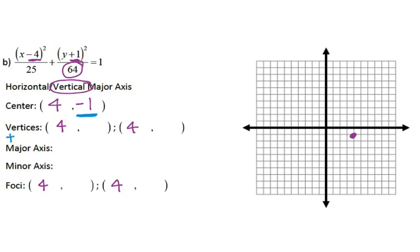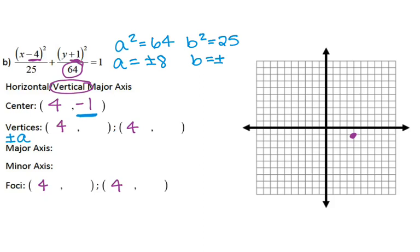Vertices are plus or minus A. A squared equals 64 — A squared is always the bigger number for ellipses — so A is plus or minus 8. B squared is 25, so B is plus or minus 5. I'll use the Y coordinate of the center, negative 1, and add and subtract 8: negative 1 plus 8 gives me 7, and negative 1 minus 8 gives me negative 9. I'll plot those vertices. Since I have a vertical major axis, my minor axis is horizontal and uses B, so I move horizontally 5 units in both directions from my center.